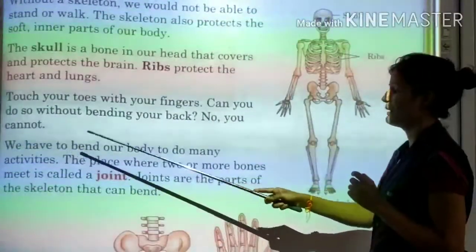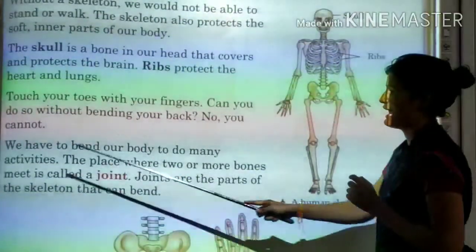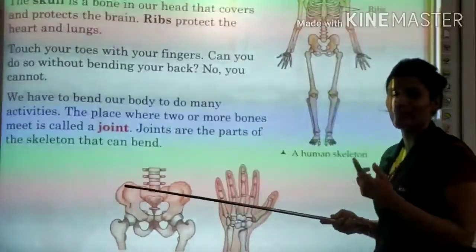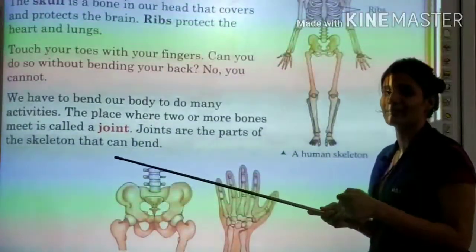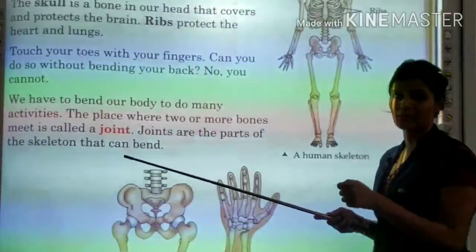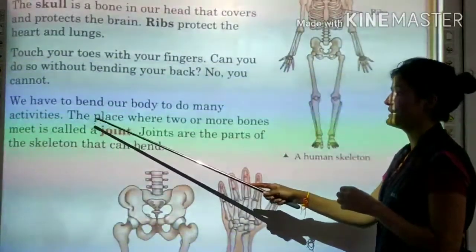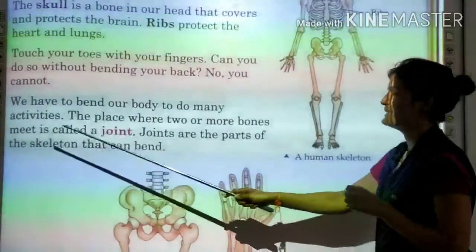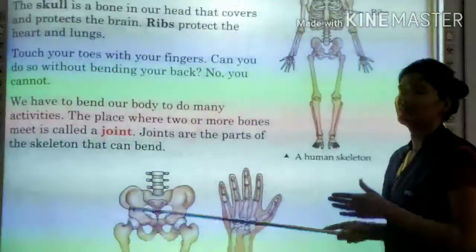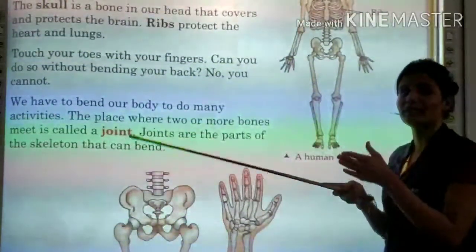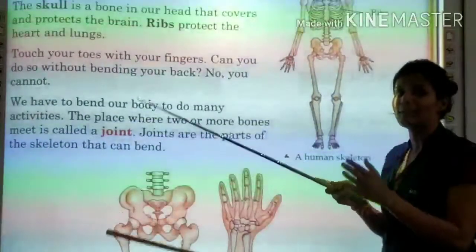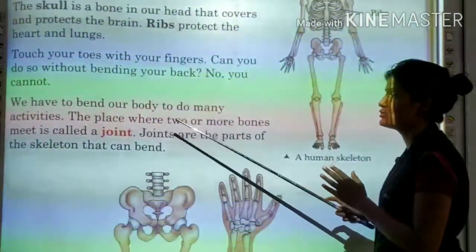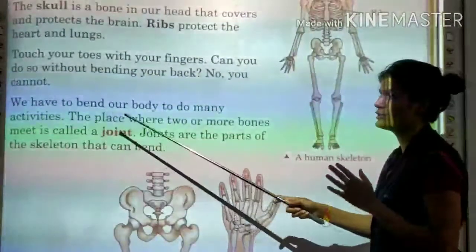We have to bend our body to do many activities. If you have to pick something from the floor, then you have to bend your body. The place where two or more bones meet is called a joint.